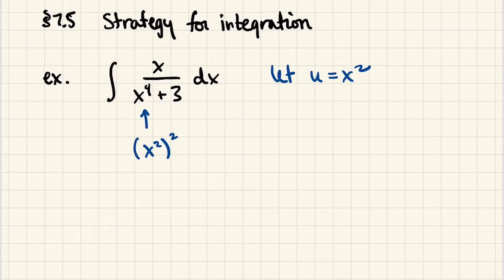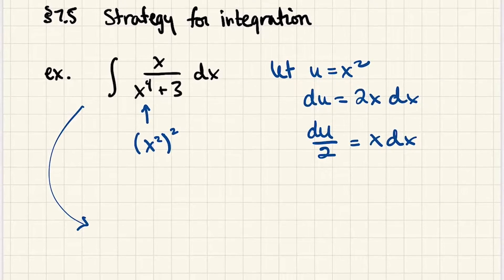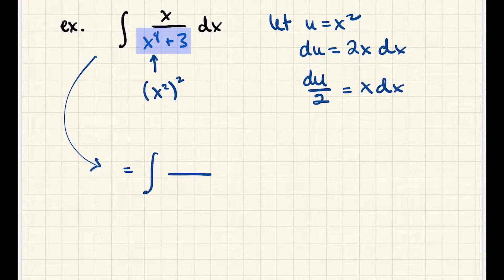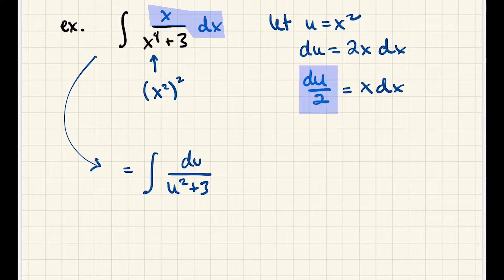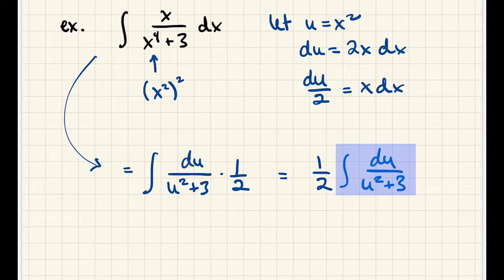If we let u equal x squared, then du is 2x dx, and we have an x dx in our integral, so that's just du over 2. Our x to the fourth plus 3 in the denominator becomes u squared plus 3, and x dx becomes du over 2. We can factor the one-half out, giving us the integral of du over u squared plus 3. That was a successful transformation — we can totally handle that with a trigonometric substitution.